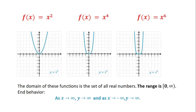Now we'll examine the graphs of y equals x squared, y equals x to the 4, and y equals x to the 6 — even degrees with coefficient 1. y equals x squared is the basic parabola with vertex (0,0), going through (1,1), (2,4), (-1,1), and (-2,4). y equals x to the 4 goes through (0,0), (1,1), (2,16), (-1,1), and (-2,16). y equals x to the 6 goes through (0,0), (1,1), (-1,1), (2,64), and (-2,64).